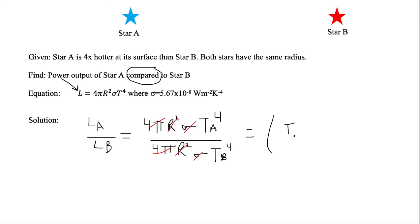And since they're both to the fourth power, I'm just going to put temperature A divided by temperature B and take the power four out and put it outside the parentheses to the fourth power.